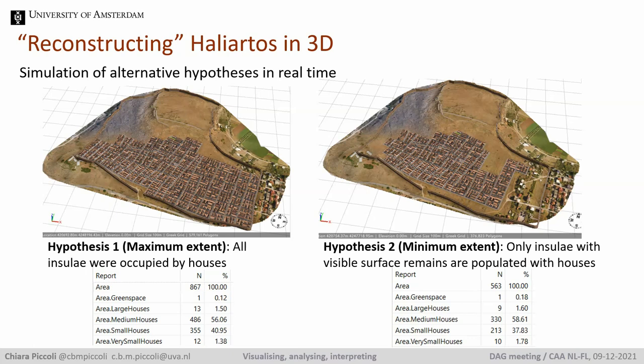On the left side of this slide, we visualize what happens if we consider that all the insulae visible and inferred are occupied by houses. I've written the rule in such a way that it's possible to automatically produce a report with the number of houses created. On the scenario displayed on the right side, we exclude the insulae where archaeological remains are absent or the interpretation is uncertain, and the area defining the possible location of the Agora. So the first hypothesis represents the maximum extent and the second the minimum extent that Haliertos could have had in antiquity.